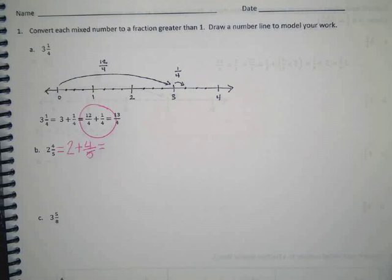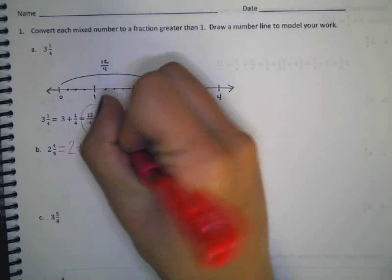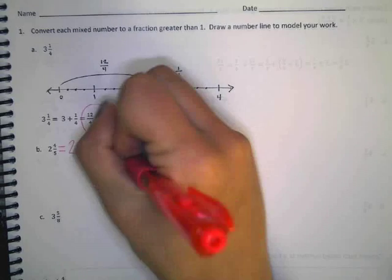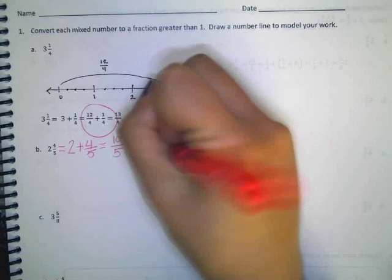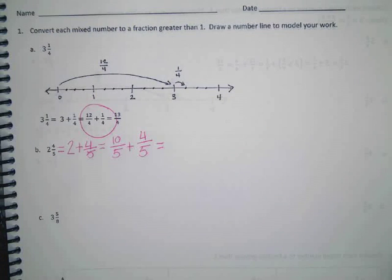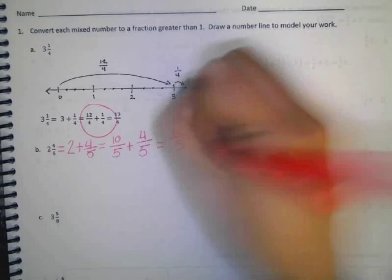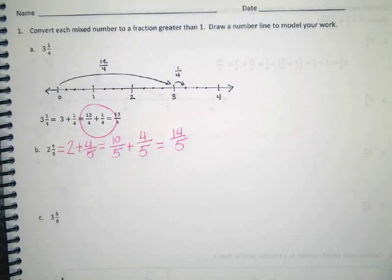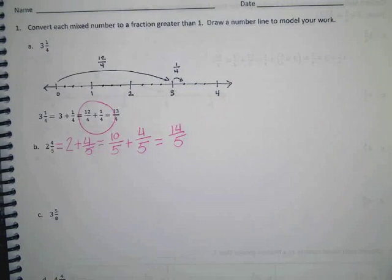10 fifths. Why did you choose to make it into fifths? Because that's what the fourth fifths is. Yeah, we want them to have the same denominator. So she said 10 fifths, and then I have to still add 4 fifths to it. And 10 fifths plus 4 fifths is 14 fifths.